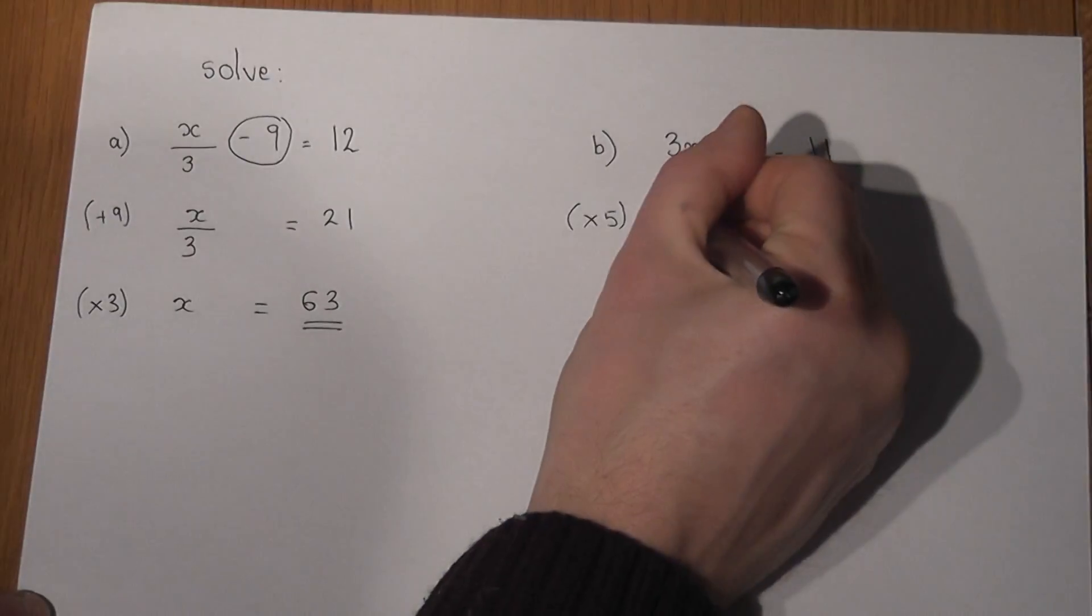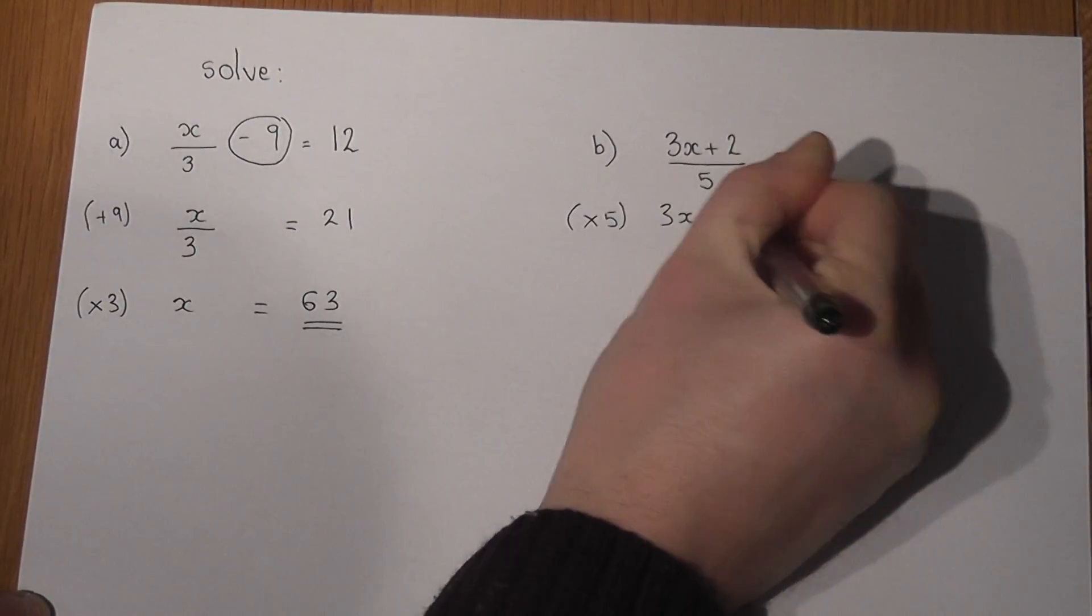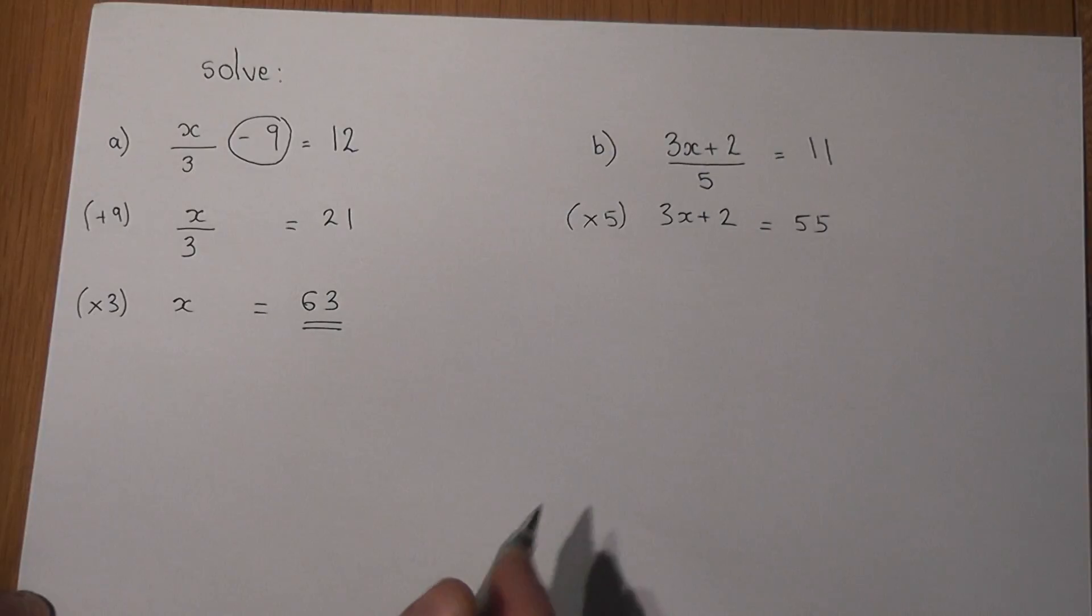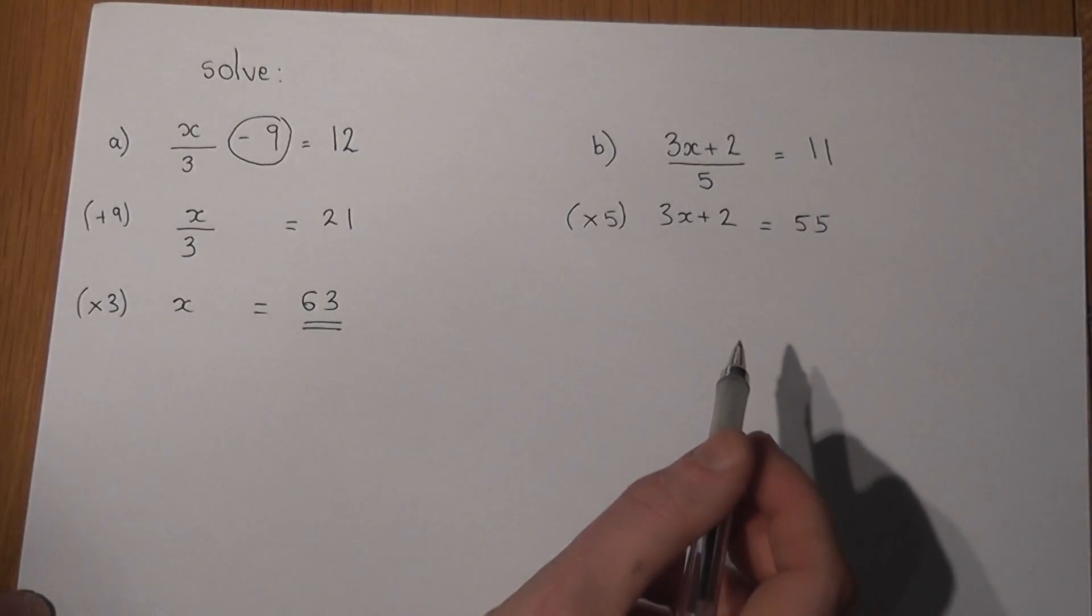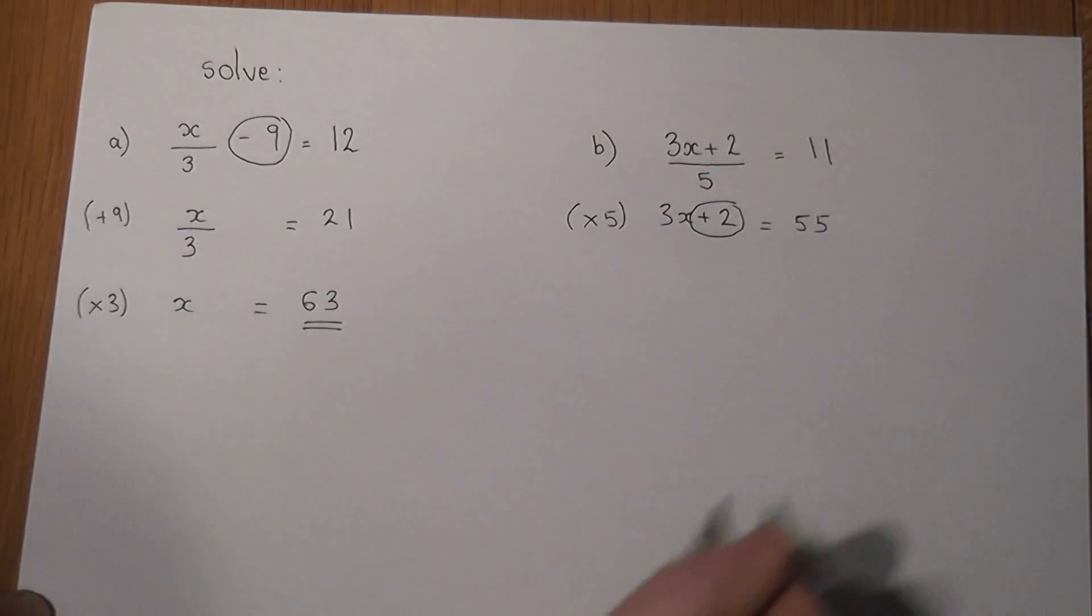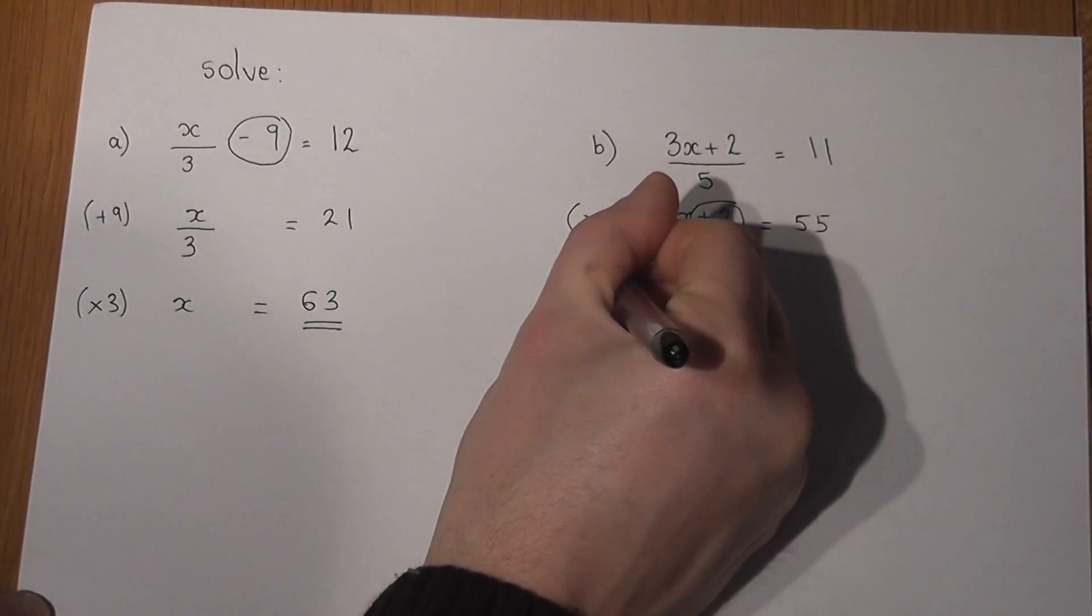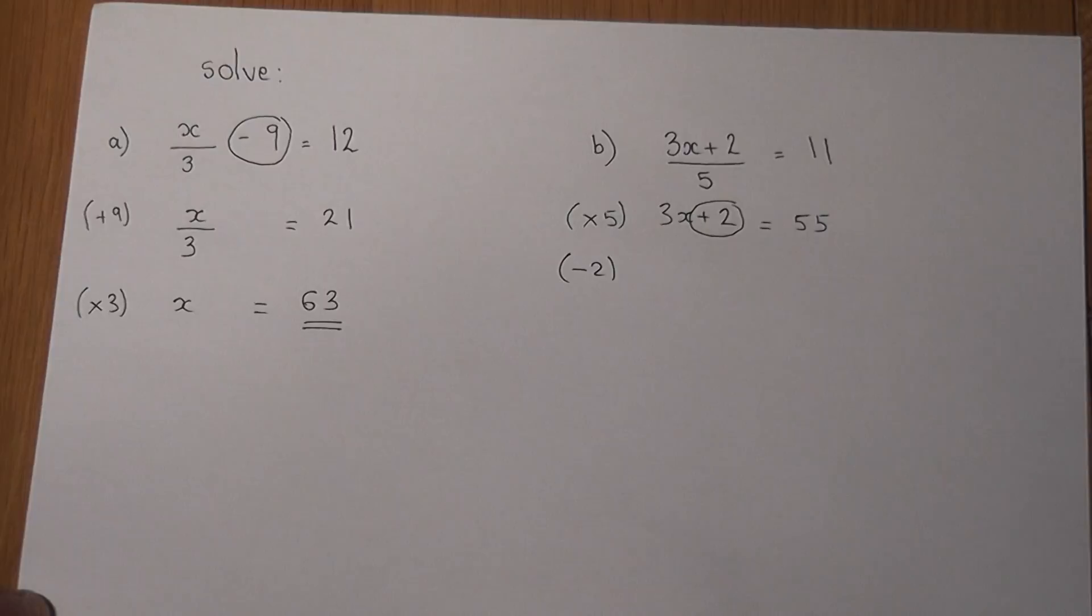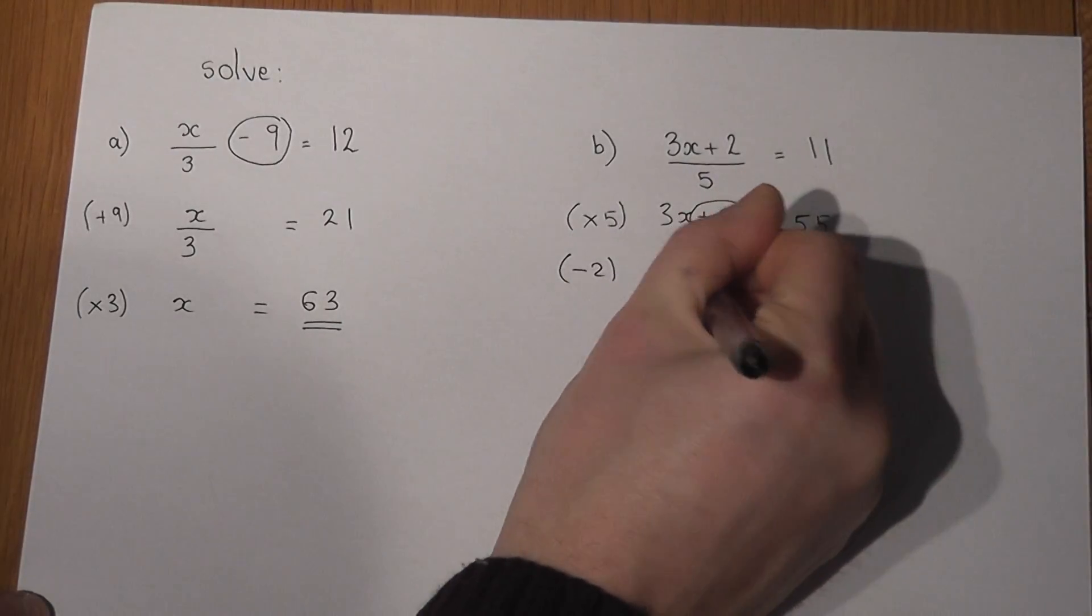This then becomes a normal equation to solve. In some respects we've got a plus 2 on the left hand side, so if we subtract 2 that will then cancel off, so 3x becomes 55 take away 2, which is 53.